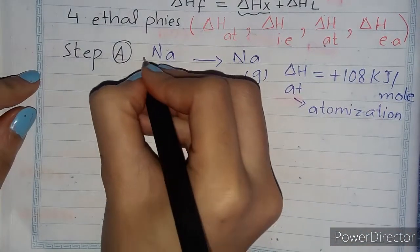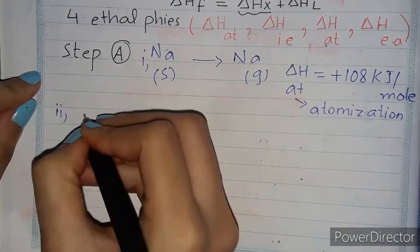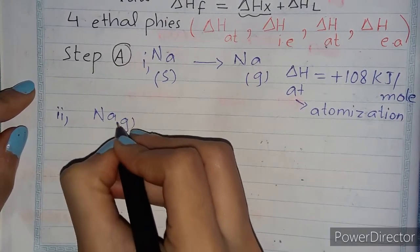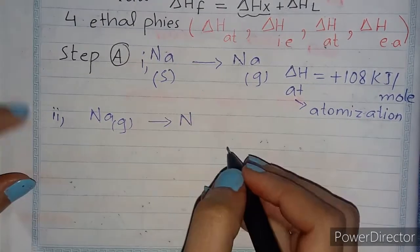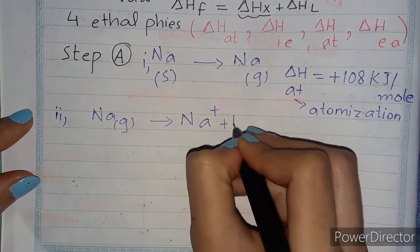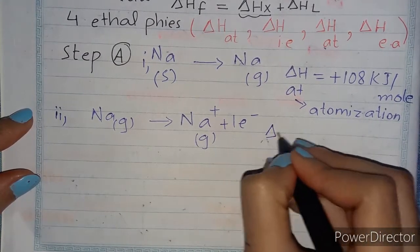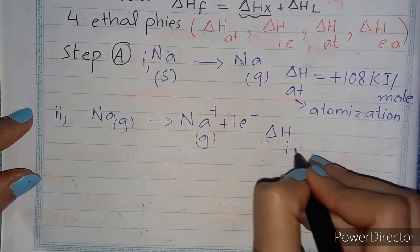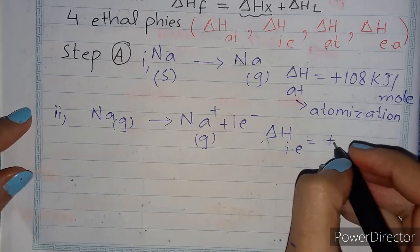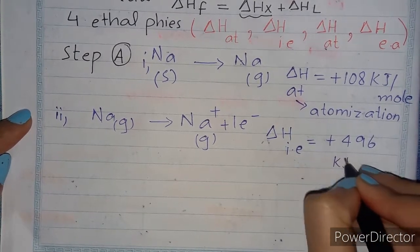Second step: sodium in gaseous form converts into a gaseous ion by losing one electron. Na(g) → Na⁺(g) + e⁻. This is the enthalpy of ionization, which is endothermic with a value of +496 kJ/mol.